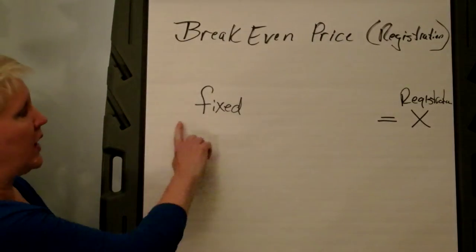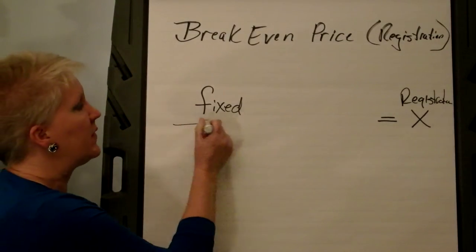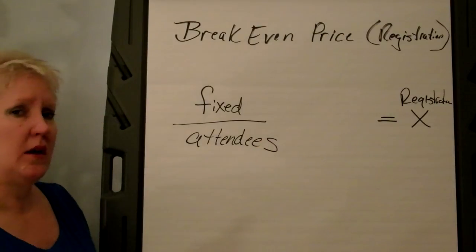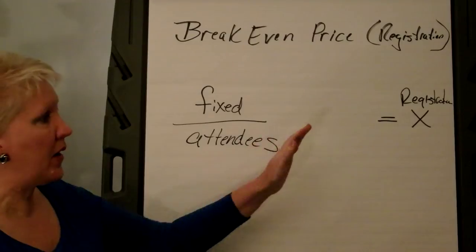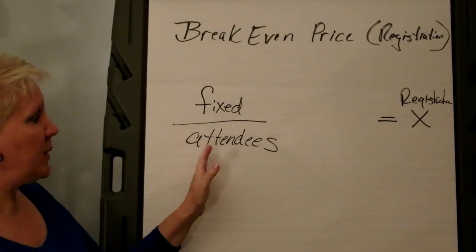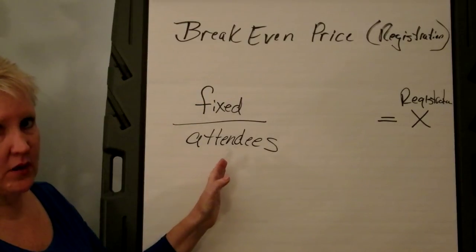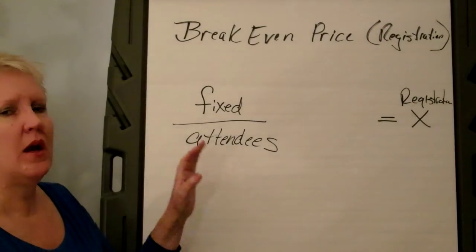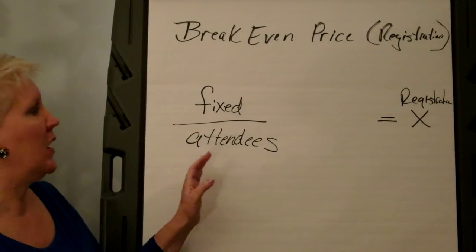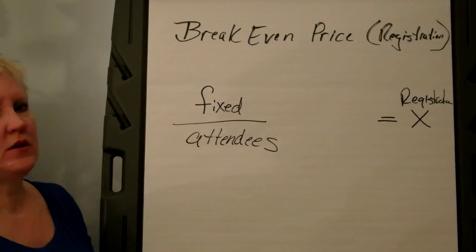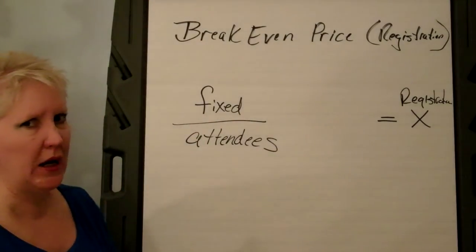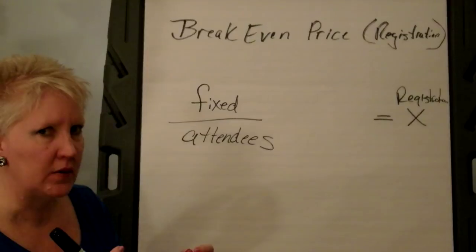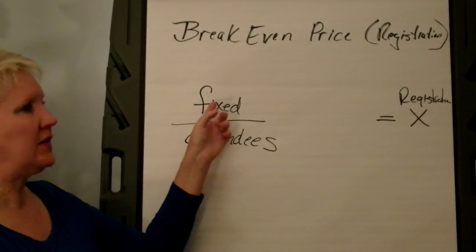In this formula, you start out with your fixed cost and you divide it by your number of attendees. Now sometimes people ask, how do I know how many attendees I'm going to have? In this particular case, you either know exactly how many attendees are coming, or you have a very good idea — whether due to the size of the room or it's a very specific group. So you take your number of attendees, and if you think of the fixed cost as a big pie, you need to figure out what portion of the pie each attendee has to cover. You're dividing the number of attendees into the pie.